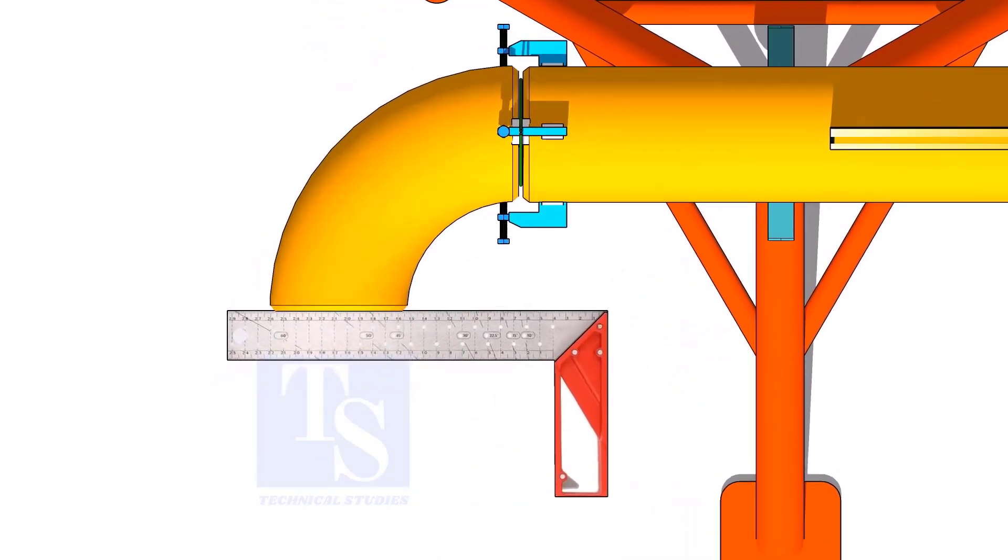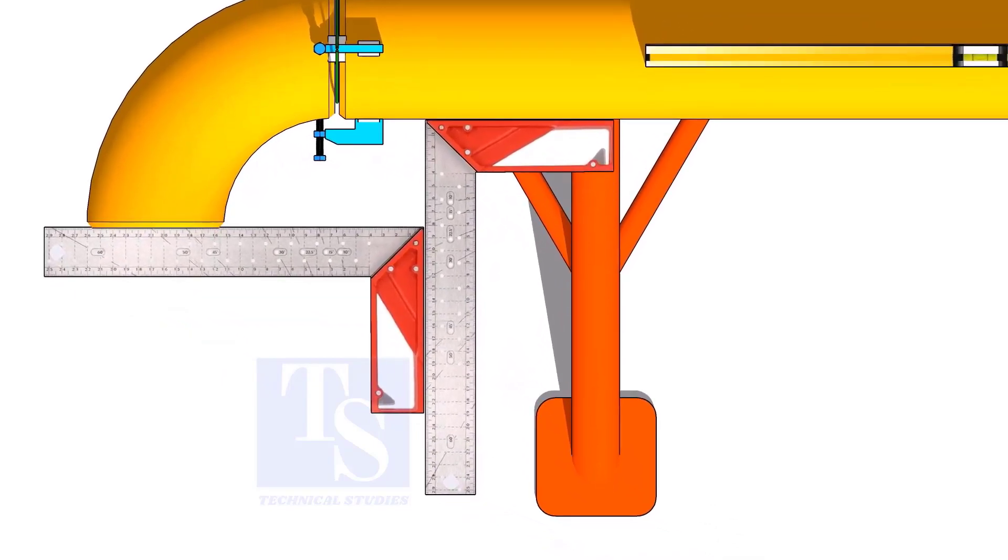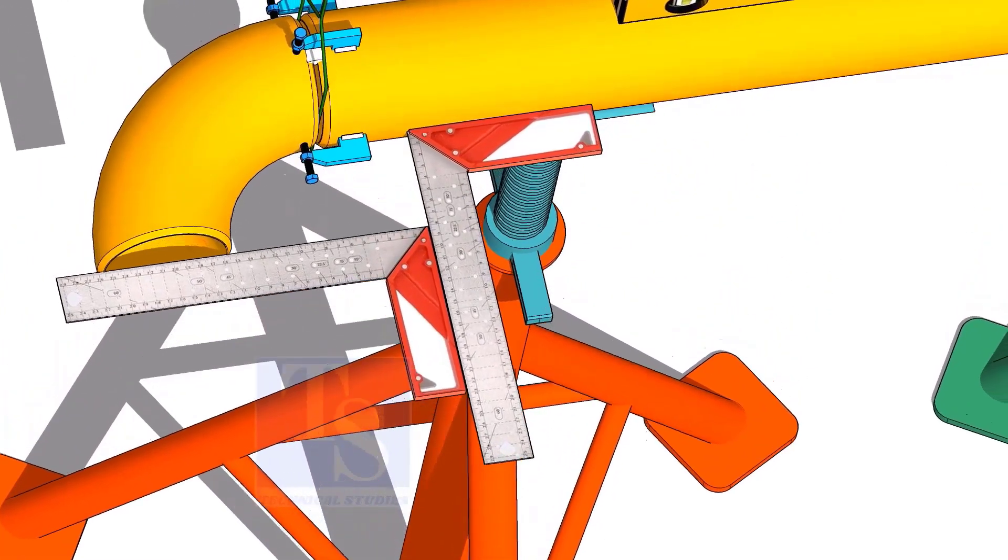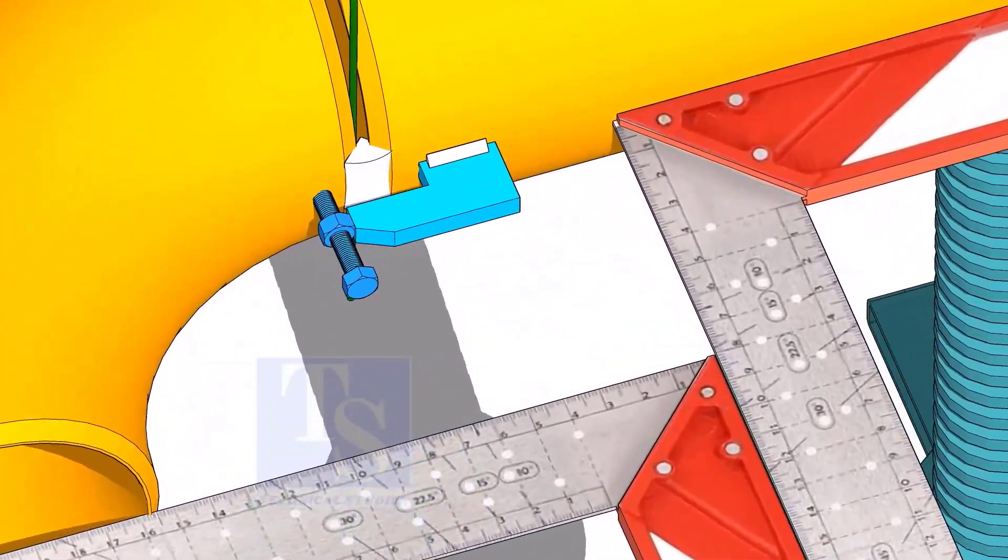Correct the squareness of the elbow using right angles, as shown. Tack weld at both sides of the joints.